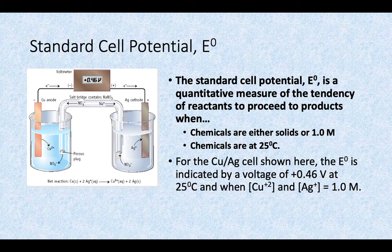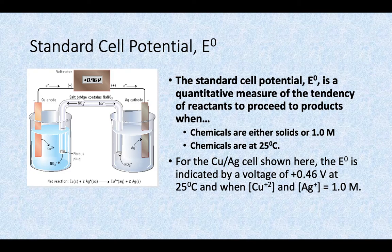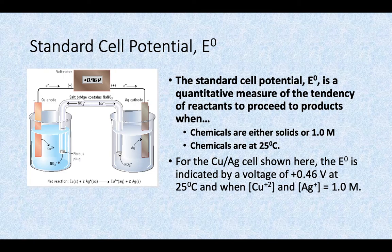When we calculate those standard cell potentials, that little naught, that little zero there next to the E, means that the reactions are taking place under standard conditions. In other words, 25 degrees Celsius. And then the chemicals that we'll be looking at for making those calculations, the assumption is that they are either solids or one molar solutions.